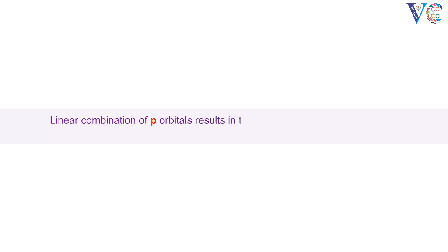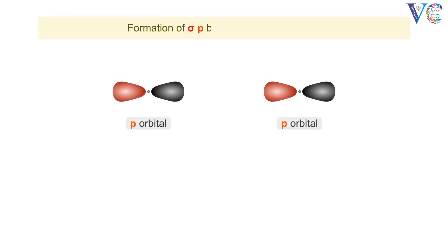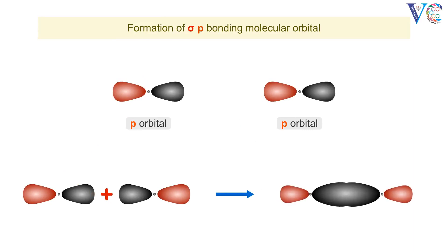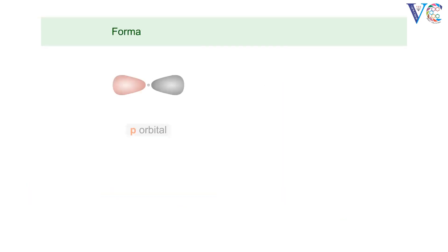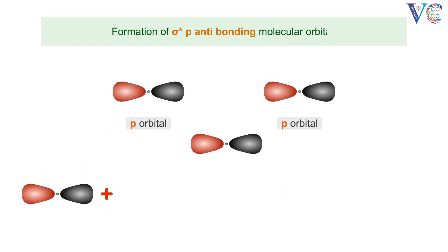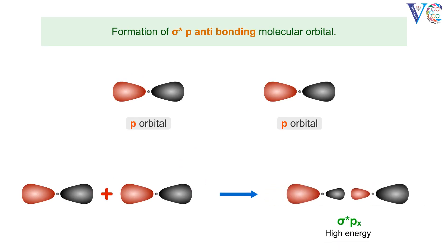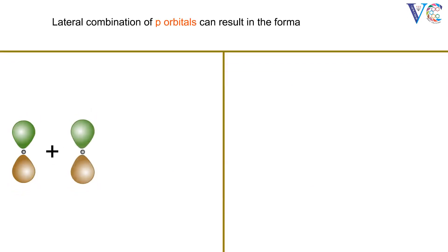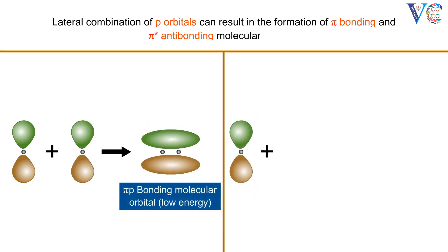Linear combination of P-orbitals results in the formation of σ-bonding and σ-antibonding molecular orbitals. Lateral combination of P-orbitals can result in the formation of π-bonding and π-star antibonding molecular orbitals.